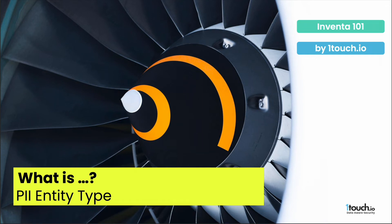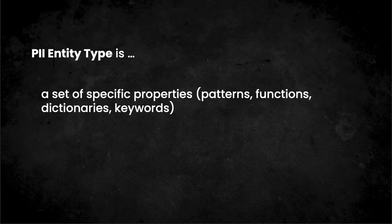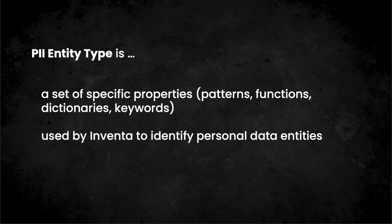Hello everyone! In this video I will explain what PII Entity Type is. PII Entity Type is a set of specific properties used by Inventor to identify personal data entities in traffic, files, databases and other data sources.